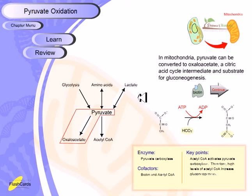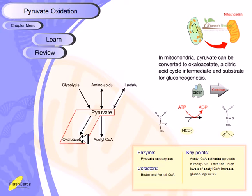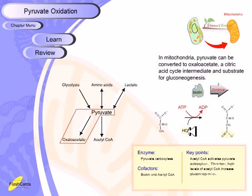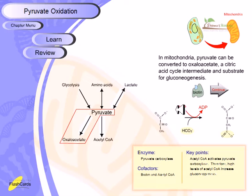In mitochondria, pyruvate can be converted to oxaloacetate, a citric acid cycle intermediate and substrate for gluconeogenesis. This conversion of pyruvate into oxaloacetate is carried out by the enzyme pyruvate carboxylase, which attaches a carbonic acid group (HCO3−) onto pyruvate, generating an extra carbon to produce a four-carbon molecule called oxaloacetate. This reaction requires ATP energy.